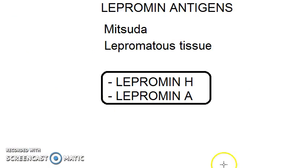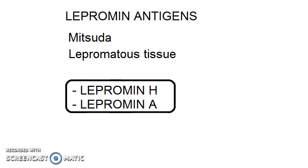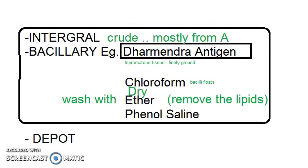So this is one type of classification: lepramine H and lepramine E. There are two types of antigens in a different classification — there can be integral or bacillary. So the lepramine antigen can be of two types: integral lepramine or bacillary lepramine.